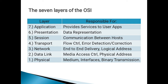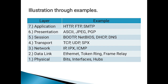These are the seven layers of the OSI model and what they are responsible for. The application layer provides services to user apps. The presentation layer is responsible for data representation. The session layer enables communication between hosts. The transport layer is responsible for flow control, error detection, and correction. The network layer is responsible for end-to-end delivery and logical addressing. These are some functions and protocols that come under these layers.